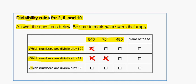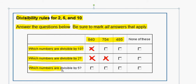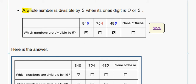Finally, it is asking us which numbers are divisible by 5. We know that a whole number is divisible by 5 when its ones digit is 0 or 5. So, if it ends in a 0 or a 5, it is divisible by 5.